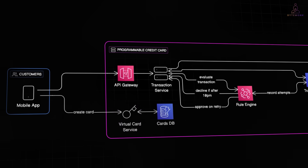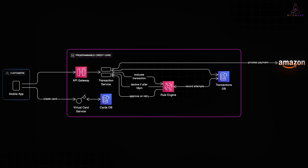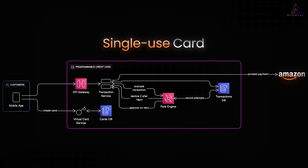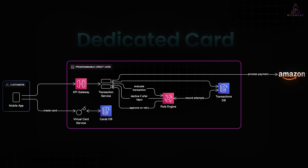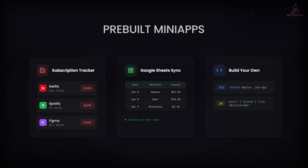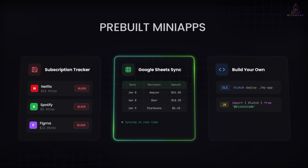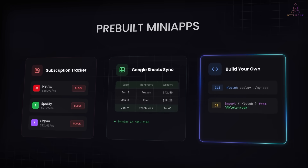Another useful feature is virtual cards — card numbers you generate on demand, separate from your main card, and you can create as many as you want, each with its own spending limit, merchant lock, or expiration rule. So if you're signing up for a free trial and don't want surprise charges later, generate a single-use card that stops working after one transaction. If you want a dedicated card just for, say, AWS that alerts you at 80% of your budget, you can set that up in minutes. They also have pre-built mini-apps you can install — one tracks all your subscriptions and lets you block the next charge with one tap, another syncs every transaction to Google Sheets in real time. And if you want to build your own, there is a CLI and JavaScript SDK to do that.